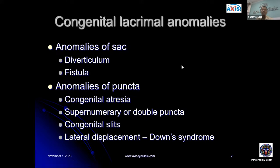When we talk of congenital lacrimal anomalies, we have anomalies of the sac — a diverticulum, which is an outpouching or a pouch inside the sac, or a fistula connecting the sac to the skin. There could be anomalies of the puncta, including congenital atresia — an opening which is extremely narrow or not opened at all — supernumerary puncta, double puncta, congenital slits, or lateral displacement of the punctum, especially in cases of Down syndrome.